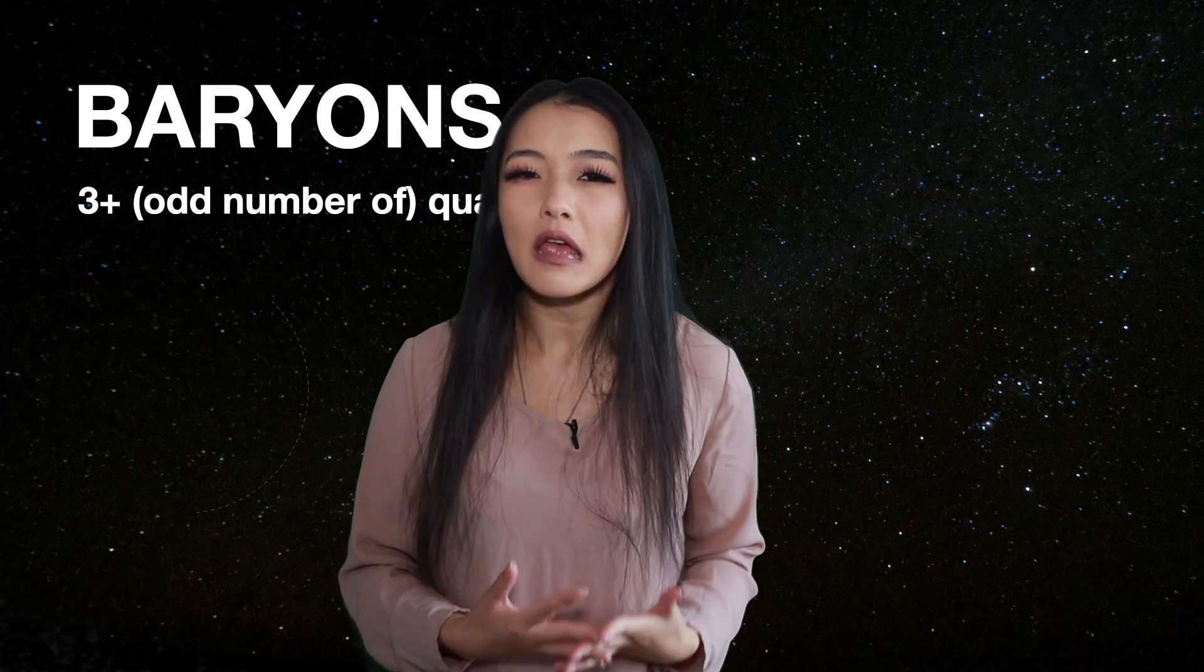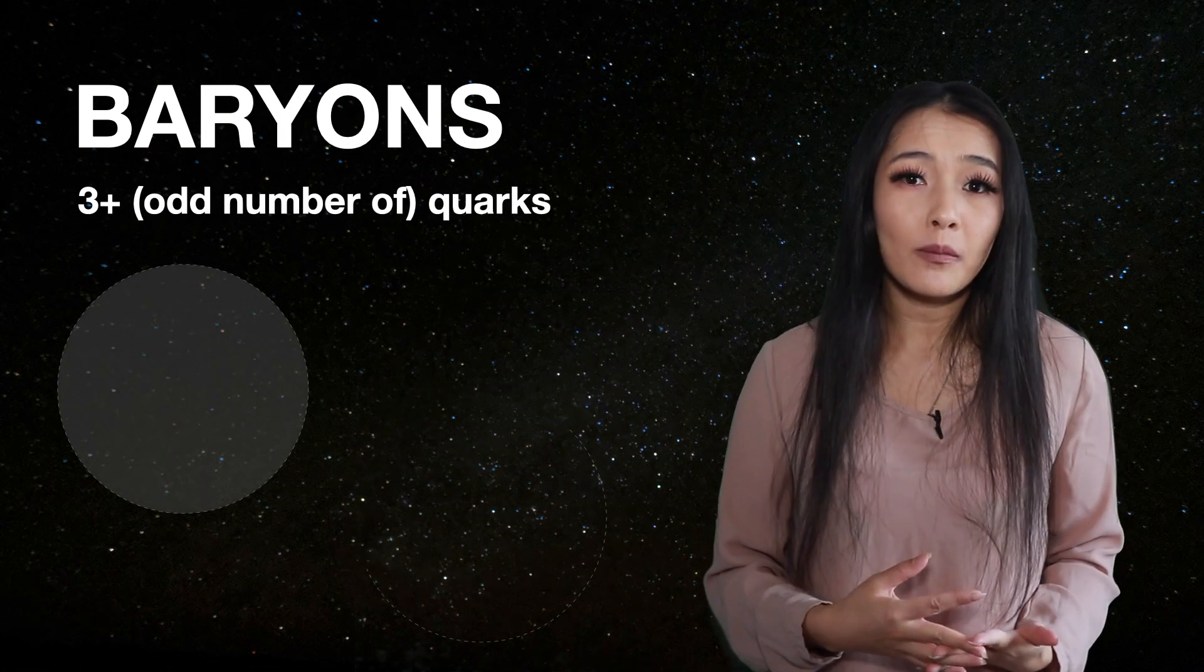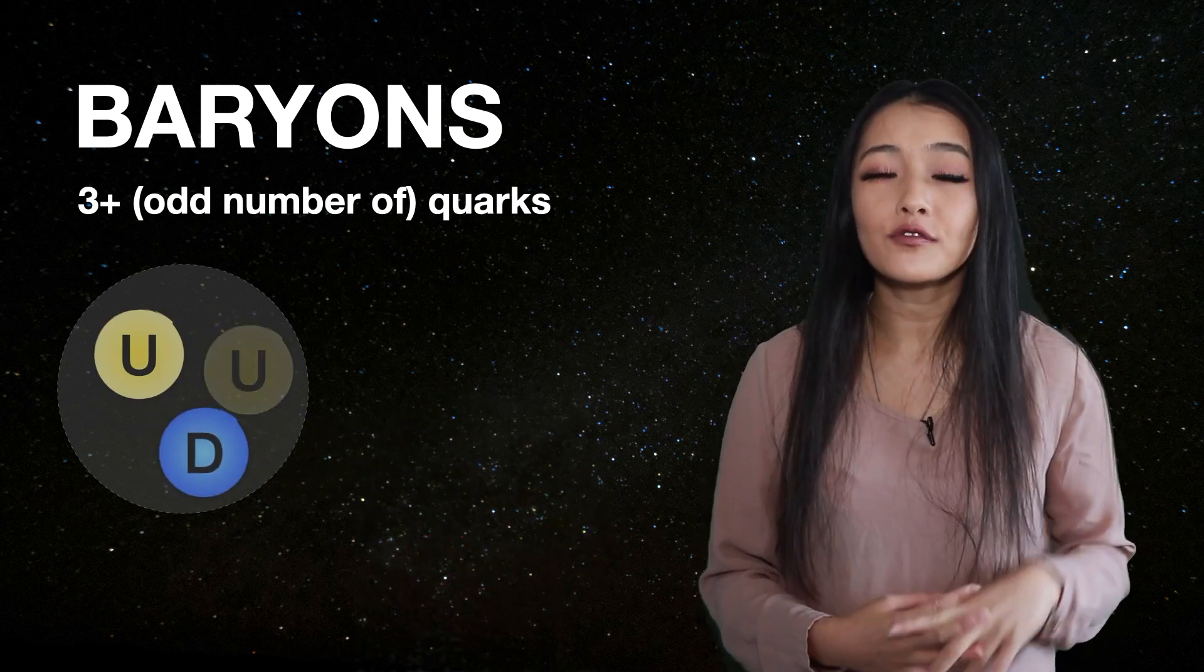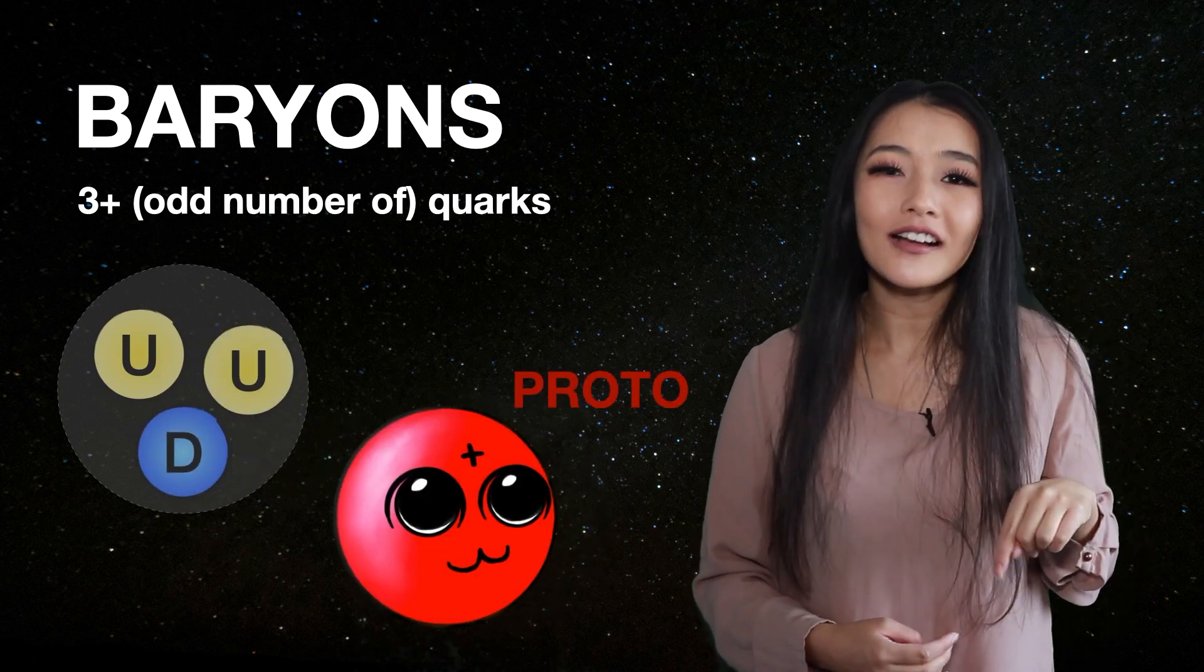Baryons, which you may recall I speak of quite regularly on my channel simply as ordinary matter, are actually subatomic particles made up of an odd number of three or more quarks. The proton is made up of two up and one down quark.